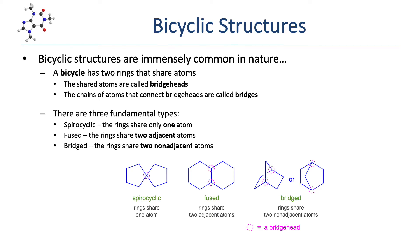In a spirocyclic compound, the rings share only one atom. If we look at the example, we see a central carbon atom that is shared by two five-atom rings. This circled atom is a bridgehead, which is often called a spirocenter in spirocyclic systems. Emanating from the spirocenter are two identical four-atom bridges that each loop back onto the bridgehead.